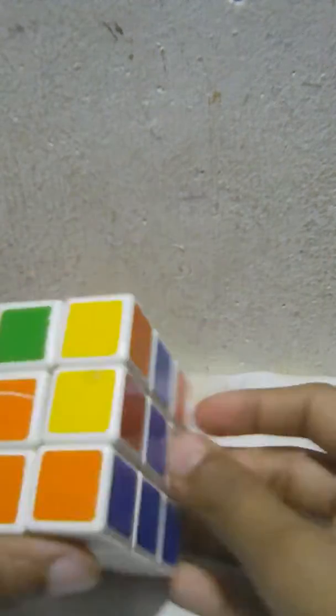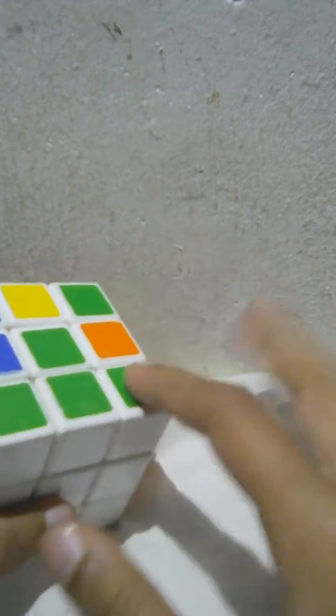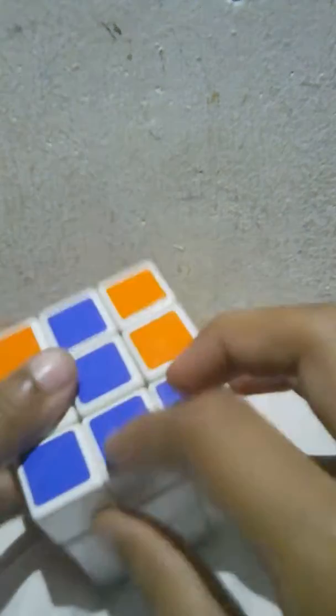After solving the first layer, we will get a T over here, a T over here, a T on each side. In some cases, we will get some other parts, other pieces also.